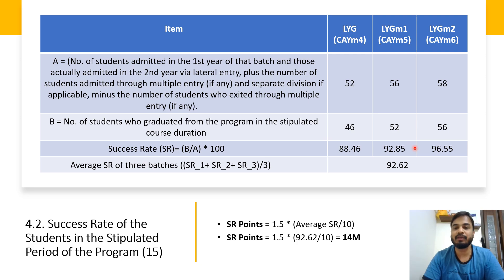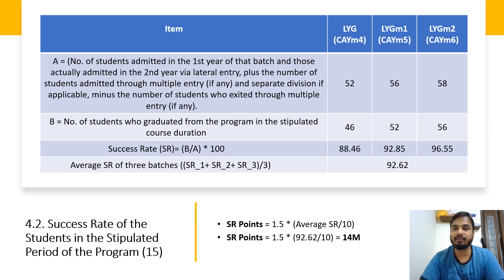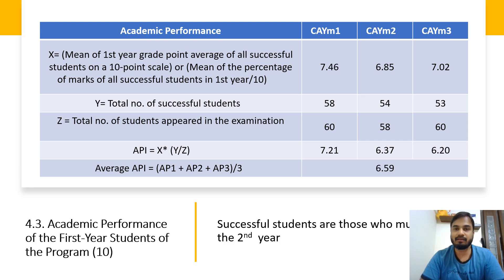For LYG M2, with 58 students and 56 passed, the percentage is approximately 96.55%. The average of LYG, LYG M1, and LYG M2 is 92.62. Applying the formula — SR Point = 1.5 × (Average SR / 10) — gives 1.5 × (92.62 / 10) ≈ 13.88, equivalent to approximately 14 marks. Greater the number of students successfully graduating in the stipulated time, the higher the marks.